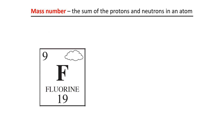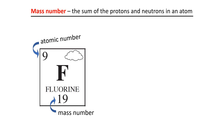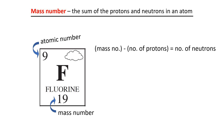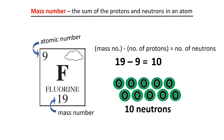Next, fluorine has an atomic number of 9 and a mass number of 19. To find the number of neutrons, use: mass number minus number of protons equals number of neutrons. Since the mass number is 19 and the number of protons equals the atomic number of 9, this is 19 minus 9, which equals 10 neutrons.